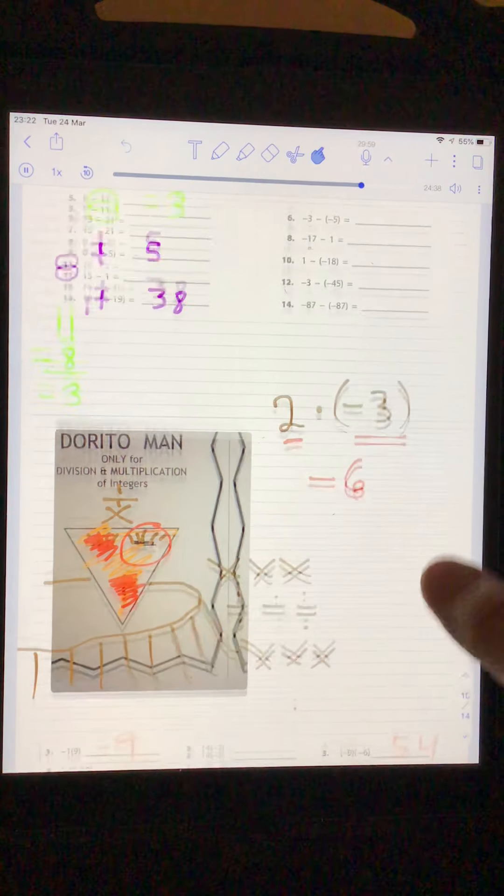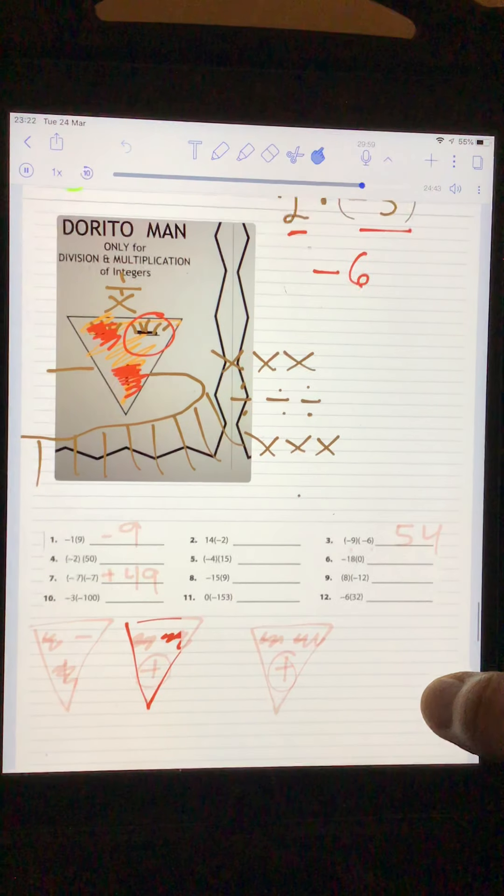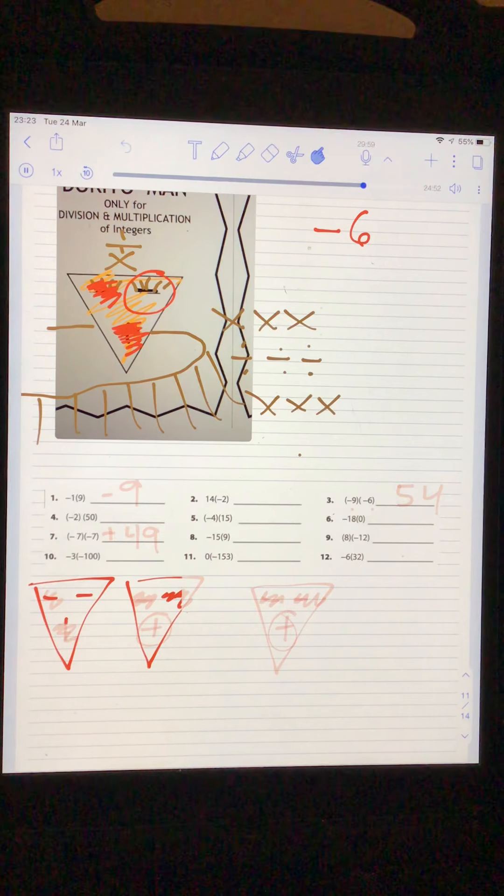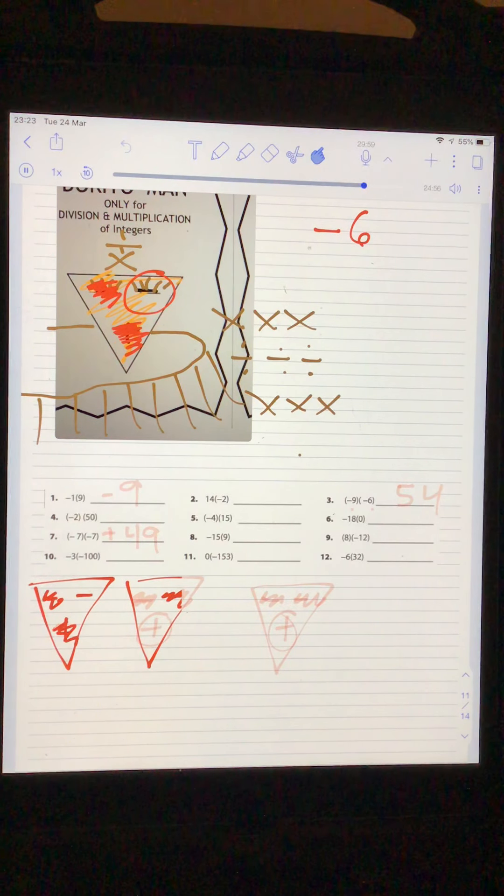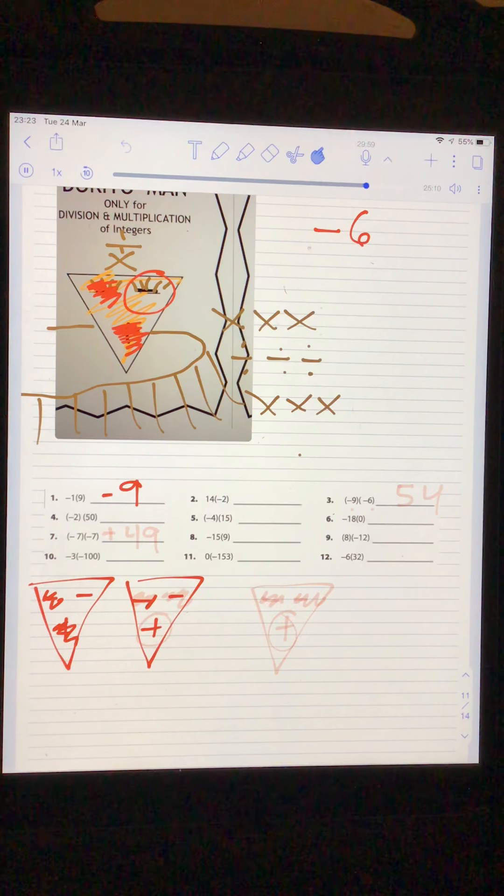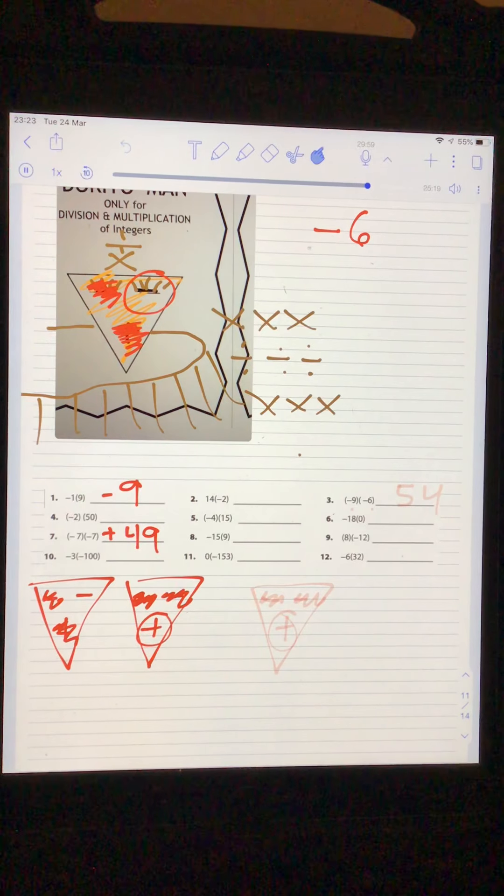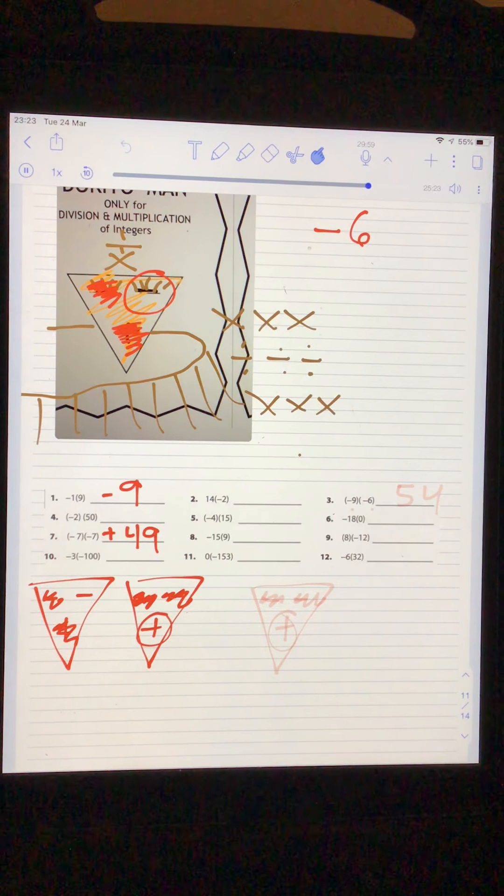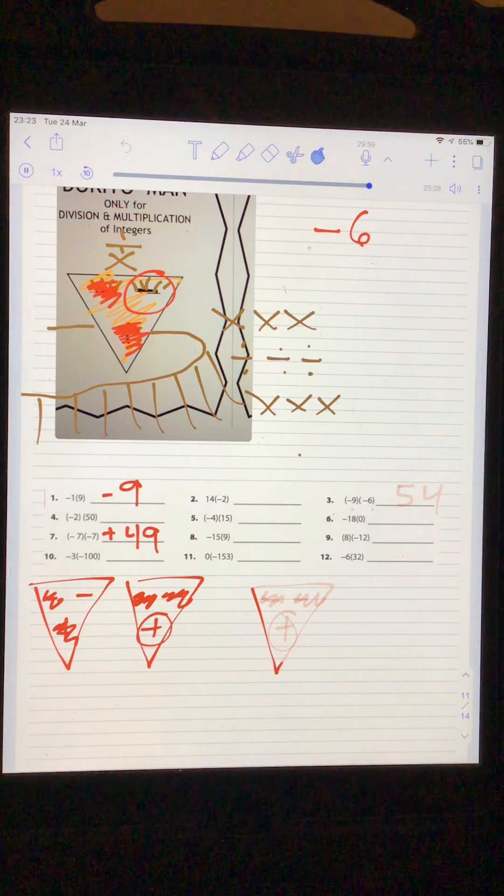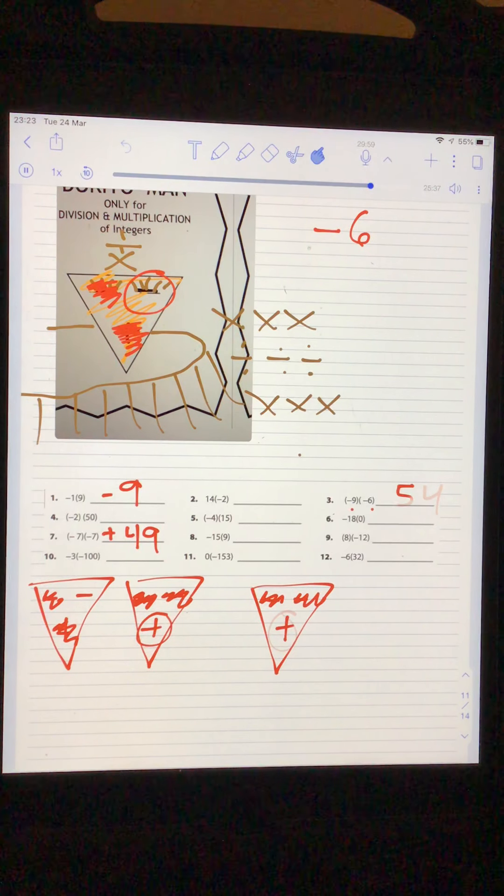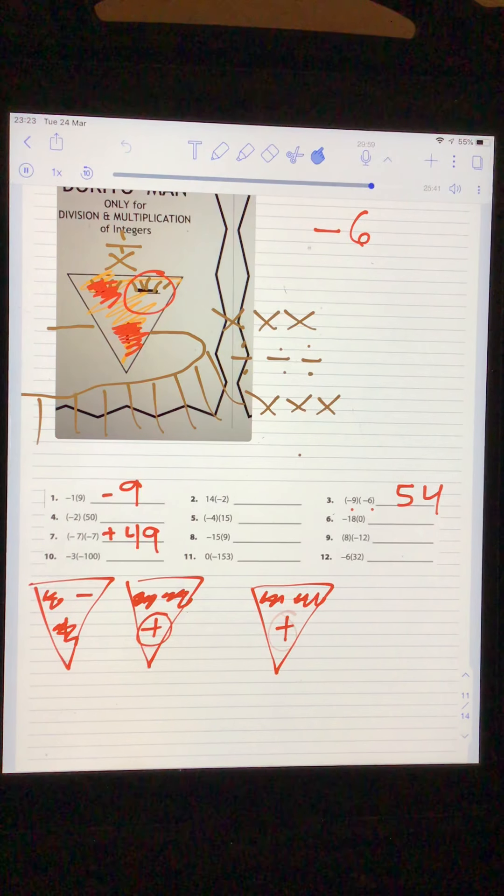My students will be doing the even problems. I'll do a few of the odd problems. Negative one times a positive nine. Well, according to Dorito Man, I have a negative one and a positive nine. So my answer is going to be a negative. Nine times one is nine. Number seven. And you don't necessarily have to draw it out every time. I'm just doing it to illustrate. Negative seven times negative seven. So I'm going to cover the negative and cover the negative. What's left is a positive. So the answer has to be a positive 49. And number three, I have a negative times a negative. It's going to be the same as the one we just did. Two negatives times each other equals a positive. Negative times a negative is going to equal positive. So I'm going to have a positive 54. Nothing too tricky there as long as you use Dorito Man.